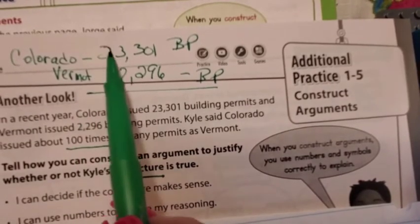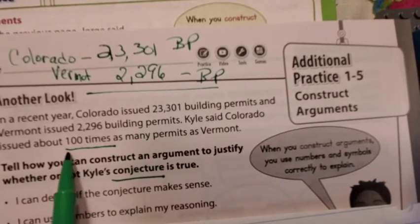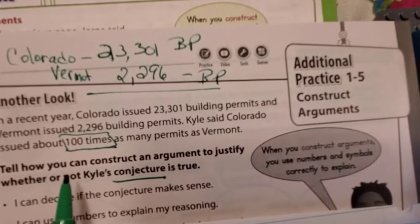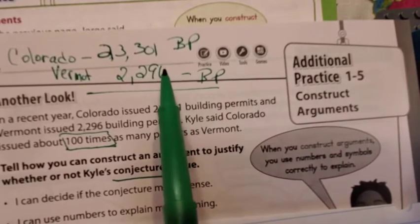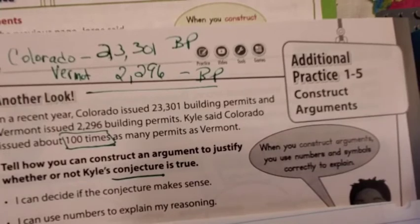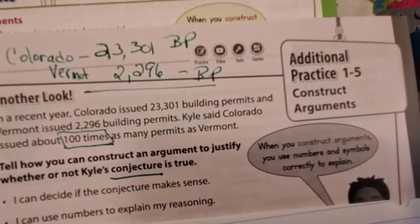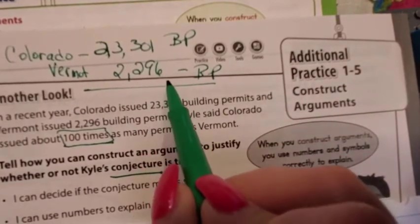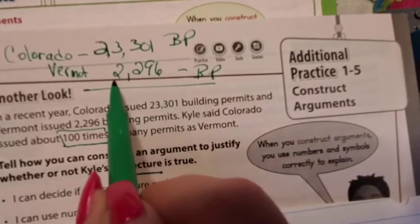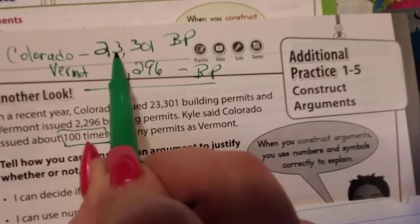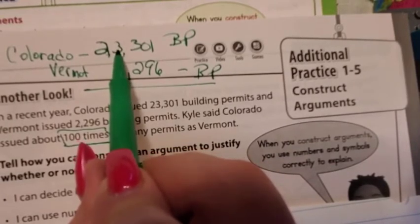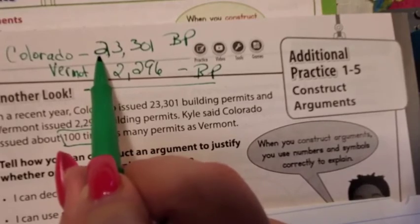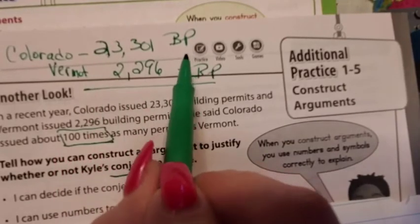Why do you think? Right, because I can compare them a lot easier. Here is the question: Is it 100 times as many permits as Vermont? Did Colorado do that? Well, okay. Here's my ones. That's not where I'm ending. I'm ending right here. The 3 is in the 1,000 place. The 2 is in the 1,000 place. The 2, this is in the 10,000 place. So this is 20,000 compared to 2,000.